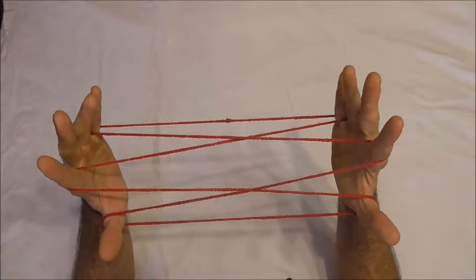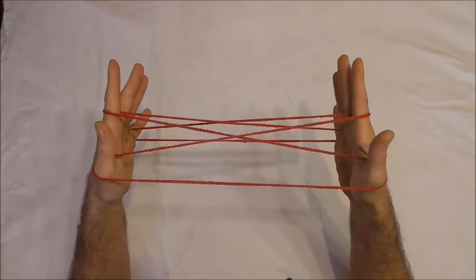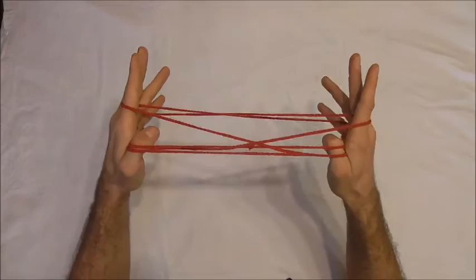Now this is the first challenging movement. I want to pick up this far little finger string with my thumbs by going first underneath all the strings. So normally it would look like this. I want to bring it back on the shoulders of my thumbs.